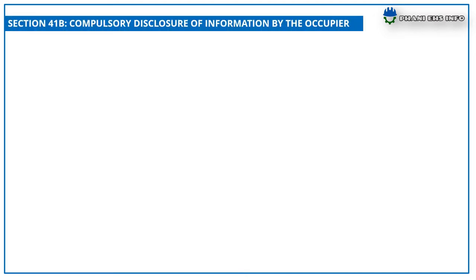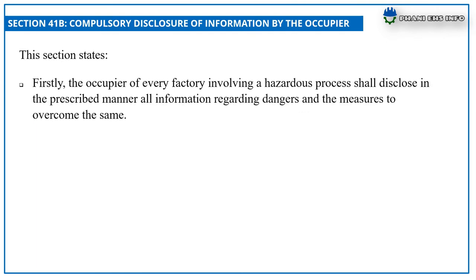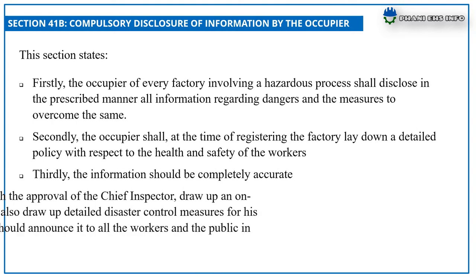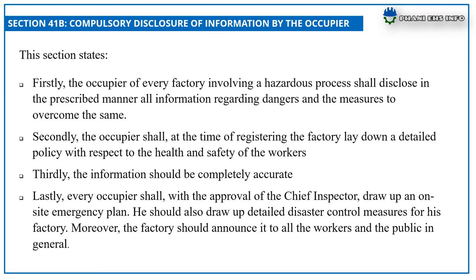Section 41B: Compulsory Disclosure of Information by the Occupier. This section states that, firstly, the occupier of every factory involving a hazardous process shall disclose in the prescribed manner all information regarding the dangers and measures to overcome the same. Secondly, the occupier shall, at the time of registration, lay down a detailed policy with respect to health and safety of the workers. Thirdly, the information should be completely accurate. And lastly, every occupier shall, with the approval of the Chief Inspector, draw up an on-site emergency plan and a detailed disaster control measure for the factory, and announce it to all workers and the public in general.